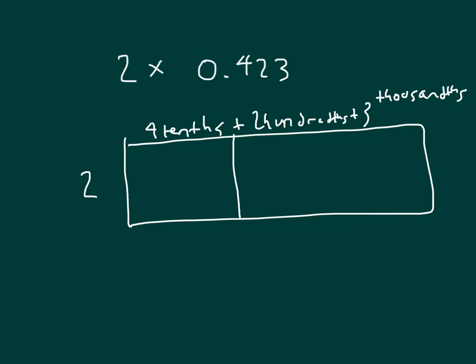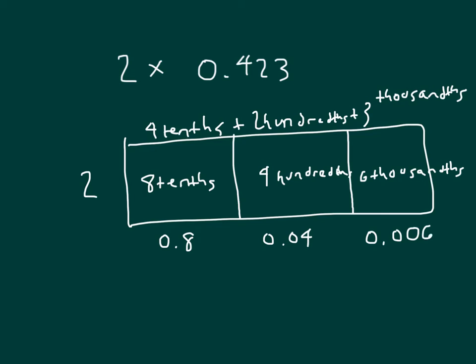2 times the 4 tenths is 8 tenths, which is 0.8. 2 times the 2 hundredths: 2 times 2 is 4, and that's 4 hundredths. 2 times 3 thousandths is 6 thousandths.